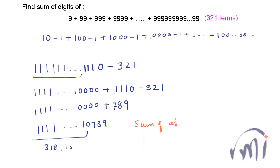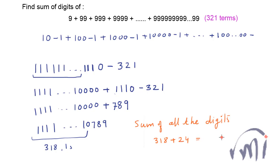So the sum of all the digits will be: the sum of 318 ones is 318, plus the sum of the last three digits 7, 8, and 9 which is 24. So the total digit sum is 318 plus 24, which equals 342.